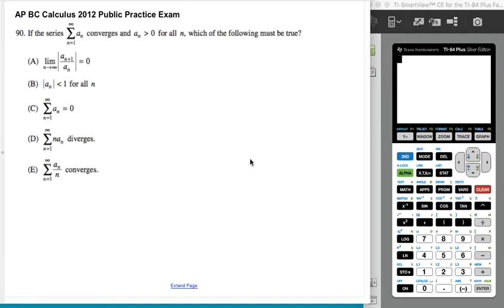Okay, so again, calculator is not going to help you here despite being a calculator section. So we have a series, and we're told that it converges and that a sub n is positive for all n. Which of the following must be true?